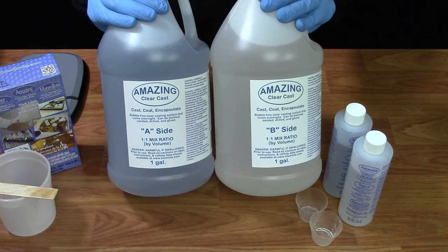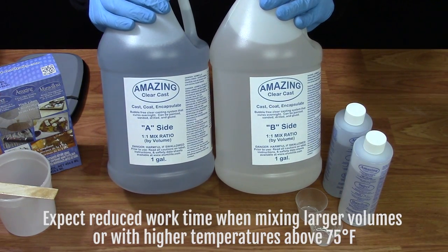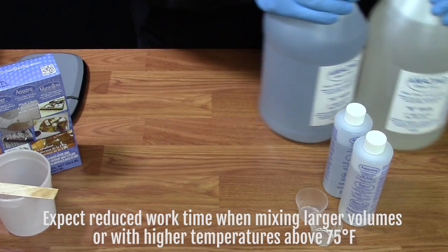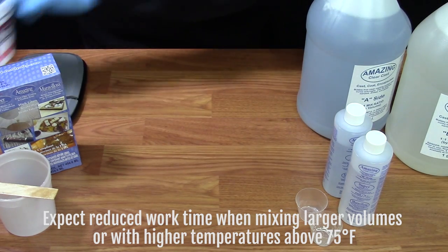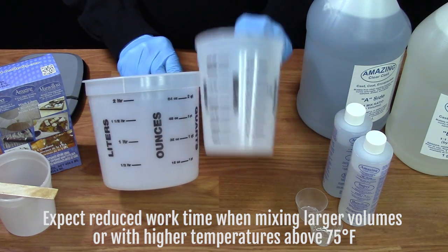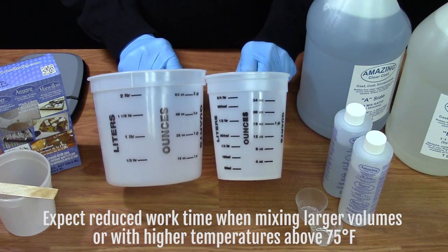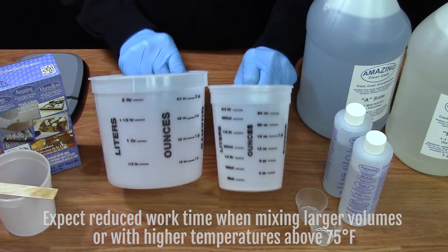If you're mixing larger volumes of Amazing ClearCast, it's a good idea not to mix any more than a half gallon to a gallon at one time and utilize larger mixing containers and measuring containers that can be found on the Alumilite website under Tools and Equipment.